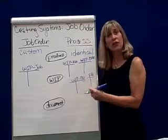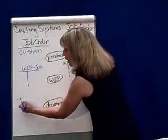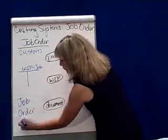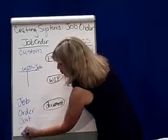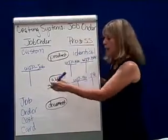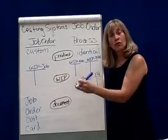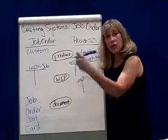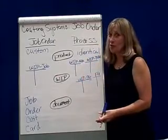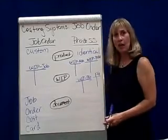As far as the documents that track these costs, in job order costing we have something called a job order cost card — there are many examples in the book. Basically, you take the customer's order, track your materials, labor, and overhead costs, accumulate your costs, compare that to what the customer paid, and see if you made a profit on that job order.